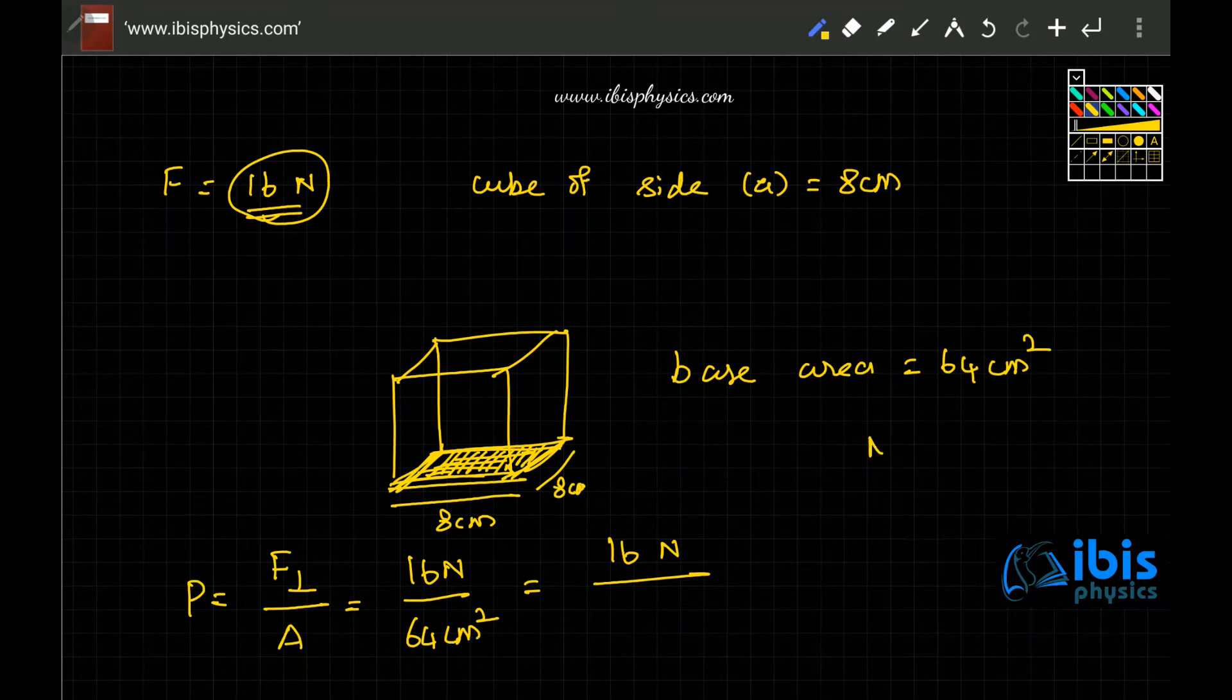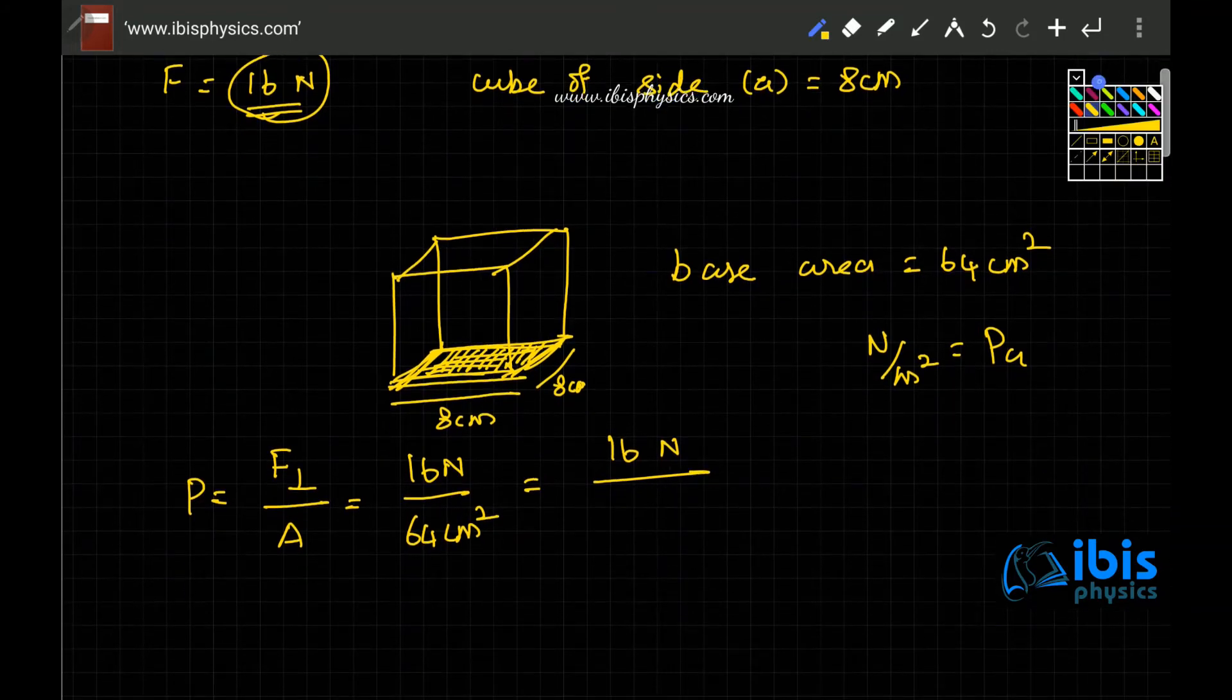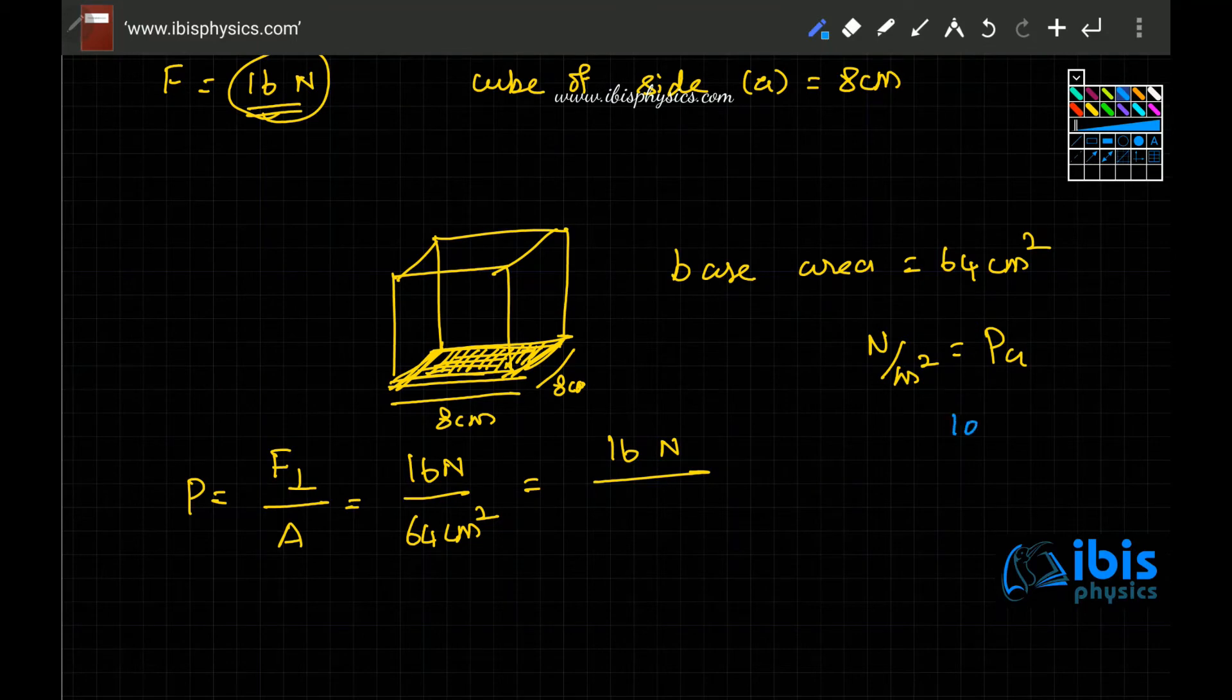We only know that Newton per meter square is Pascal. So here the centimeter square must be expressed in meter square. How do we do that? Suppose 100 centimeter is 1 meter. So we need meter square, right? We need centimeter square. So when you just square it, you'll get 1 meter square as 10 power 4 centimeter square because 100 square is 10 power 4.